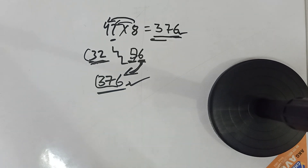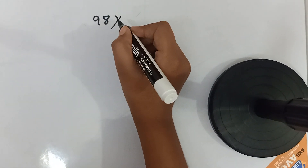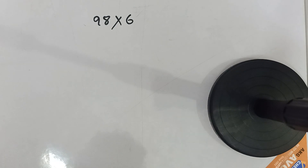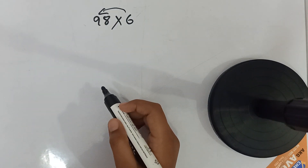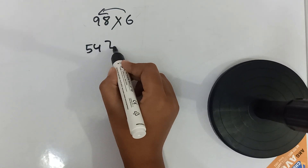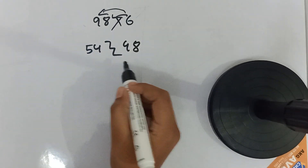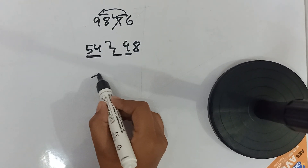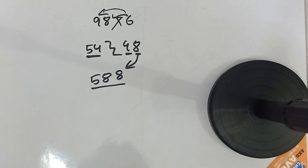Let's solve one more question — 98 multiplied by 6. First we use my method: 6 nines are 54, step, then 6 eights are 48. We take both digits of 54 and the first digit of 48 and add them. So 54 plus 4 gives us 58, and the remaining 8 we put down here, giving us 588.